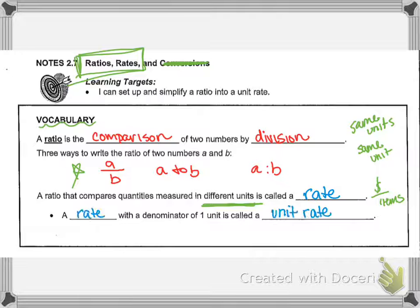So a rate with a denominator of one is called a unit rate. Remember, a denominator of one means that one is on the bottom of the fraction.